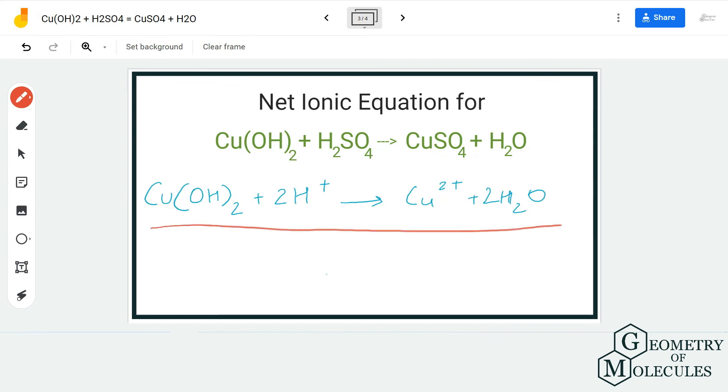So now you have Cu(OH)₂ + 2H⁺, and on the product side you have Cu²⁺ + 2H₂O. This is the net ionic equation for the given molecular reaction.